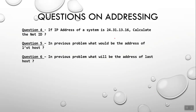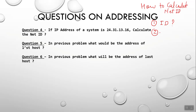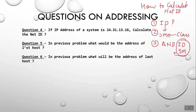The next question: if the IP address is 24.31.13.116, calculate the network ID. To calculate network ID, there are 3 steps. First, identify which class the IP belongs to. Second, determine the subnet mask of that class. Third, perform an AND operation between the IP address and the subnet mask.